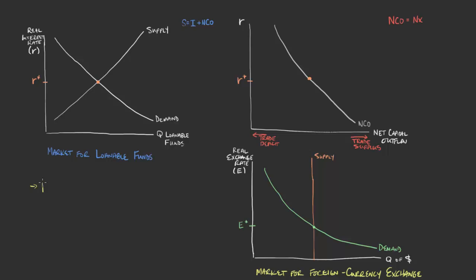Let's take a look at persistent government deficits. To simplify this, we know that the American government has been running government deficits for decades now — mostly for decades, except for a blip in the late 1990s. We want to think about how that would affect our markets. We had gone through this for a closed economy before, but now the only change is we've got an open economy.